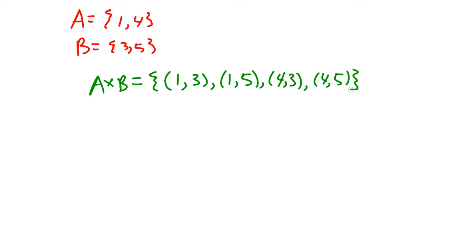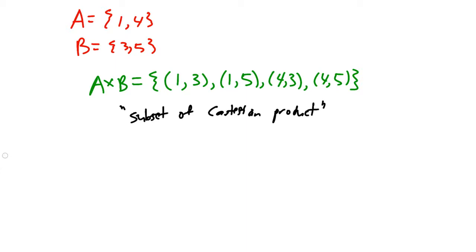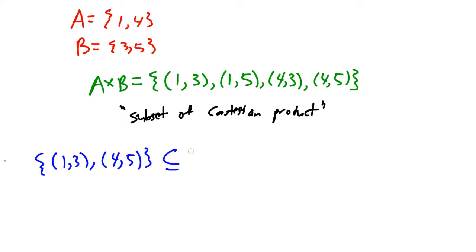A relation is a subset of the Cartesian product. So what are some subsets of the Cartesian product? Well, one of them is {(1, 3), (4, 5)} — that is a subset of A cross B. We could define this as a relation; let's call it R1.